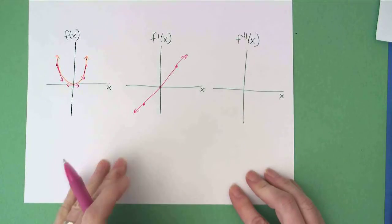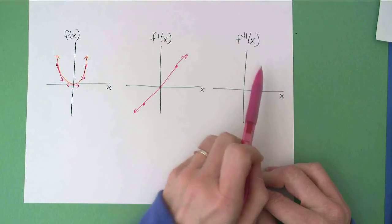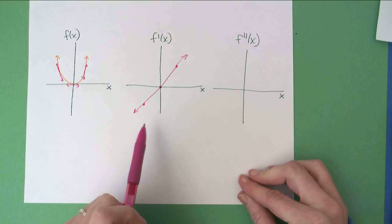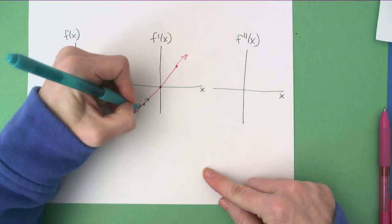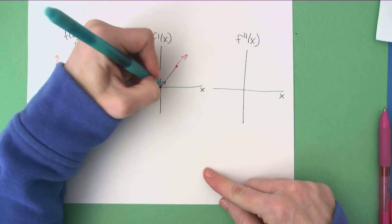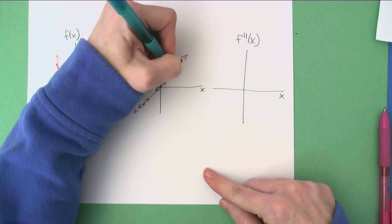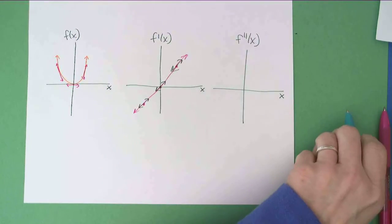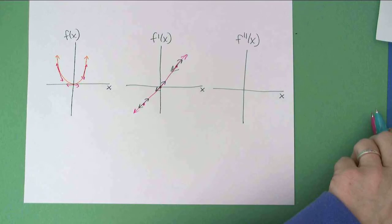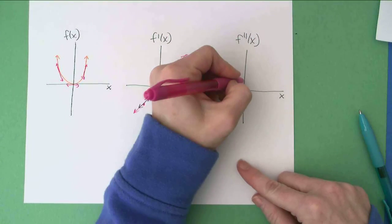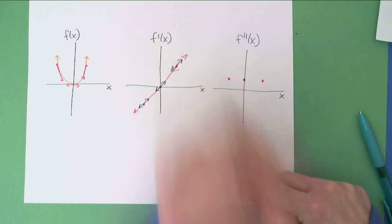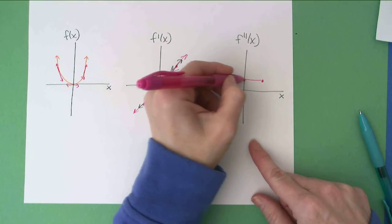Now, if I want to graph the derivative of the derivative, or the second derivative, I'm going to do the same thing. Let me get some slopes here. If I look at the slope here, it's positive, positive, and positive. So if I'm graphing the second derivative, then I'm going to be plotting a positive, the same positive, and the same positive for my slopes. So here's that graph.